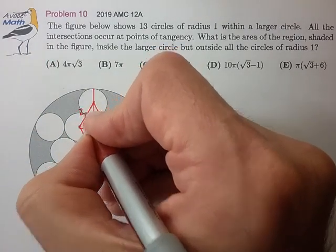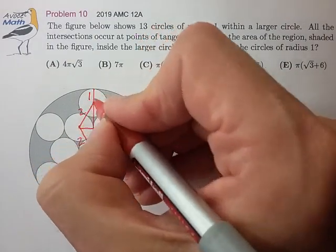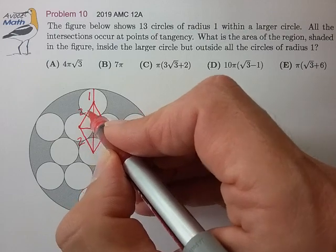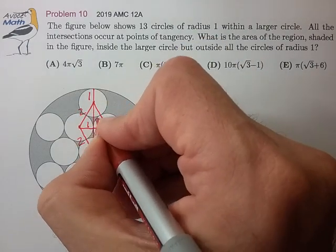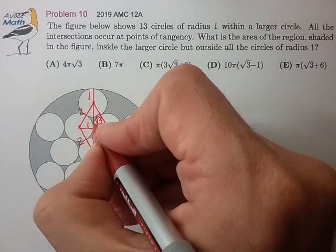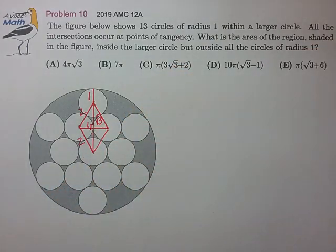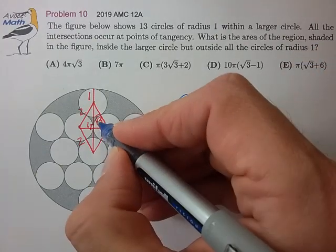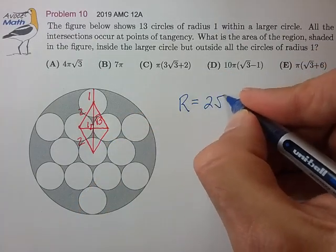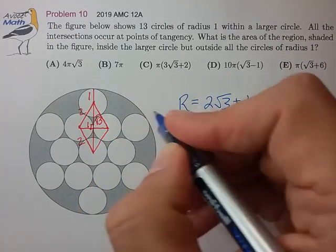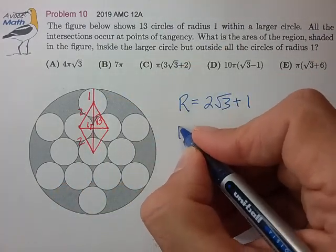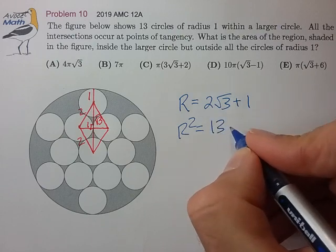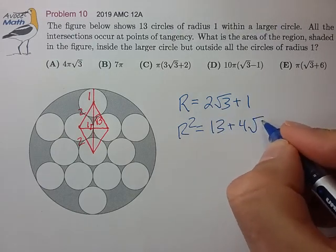This equilateral triangle is of side length 2, side length 2, and this radius is of length 1. That looks to be a 1, 2, root 3 right triangle sitting in here, from which we can quickly discover that the radius of the larger circle is 2 times root 3 plus the radius of the small circle. So r squared equals 12 plus 1, giving us 13 plus 4 root 3.